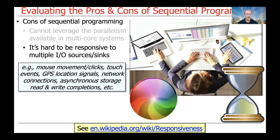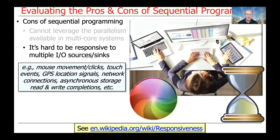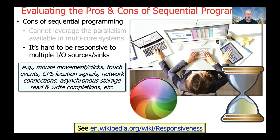Another downside of sequential programming is that it's often hard to make sequential programs responsive to multiple input and output sources and sinks. These include things like mouse movements, mouse clicks, touch events, GPS location signals, network connection data, asynchronous storage, read and write completions, and so on. Trying to keep those things managed in a single thread often leads to the dreaded spinning pinwheel or the dreaded hourglass of death seen in older single-threaded systems.